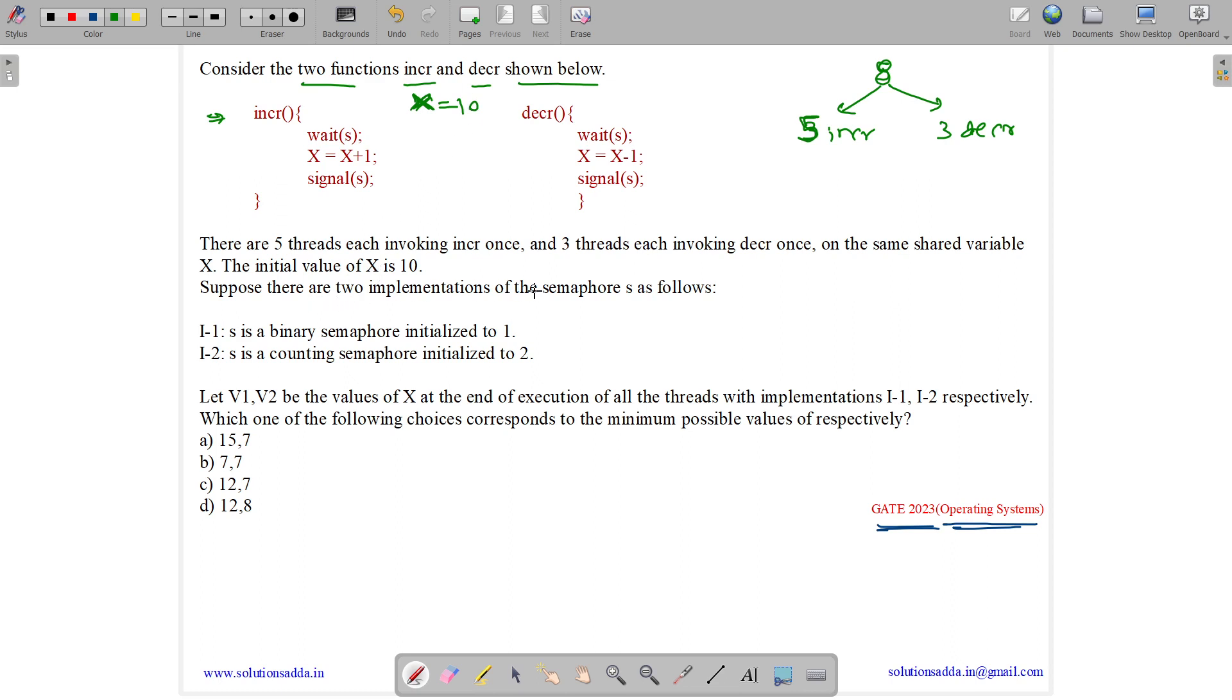Suppose the two implementations of this semaphore S is as follows: either S can be a binary semaphore or a counting semaphore. In implementation 1, it is a binary semaphore with initial value 1, and in implementation 2, it is a counting semaphore with initial value 2.